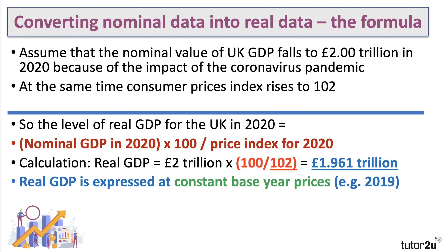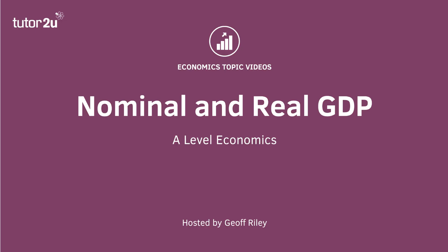So real GDP of 1.961 trillion — that's how you convert nominal into real data. We'll post another video with some exercises and exam questions asking you to make this calculation, but hopefully that explains the difference between nominal and real GDP. Thank you.